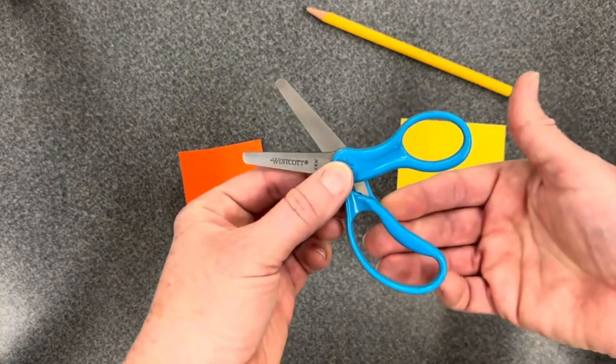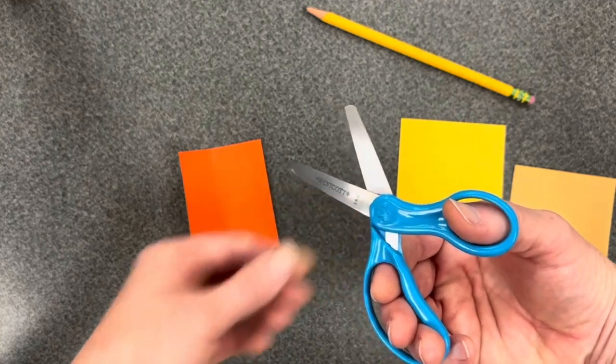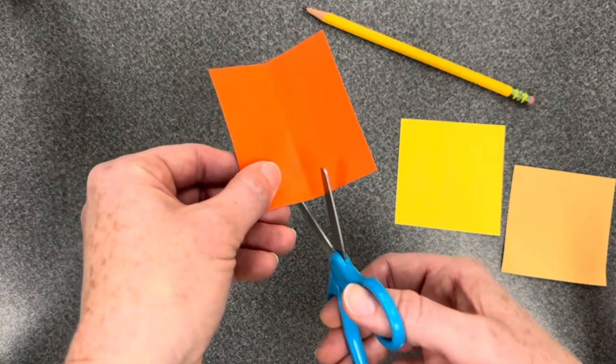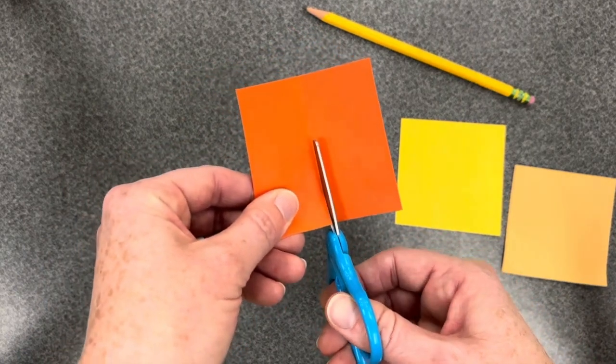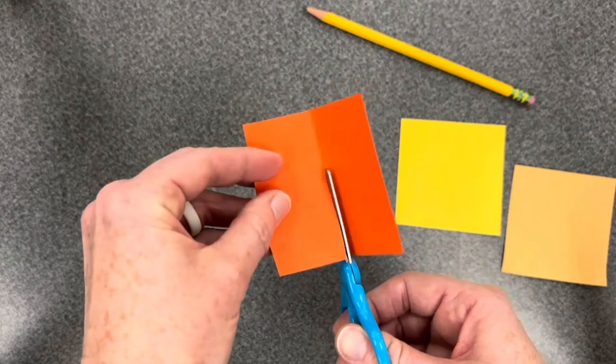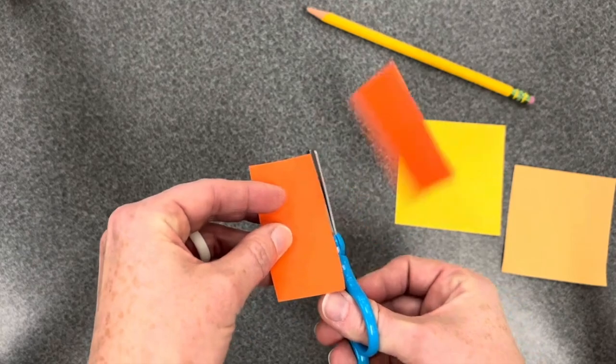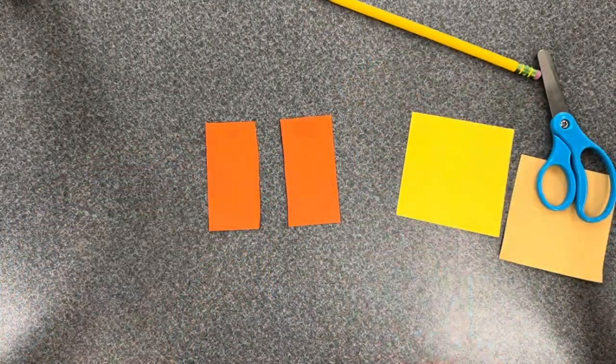So you're going to slide your fingers into the bigger section, thumb goes into the smaller section, fold your paper, feed it to the back of the scissors, and then squeeze and lift to cut on that folded line. When you're done, you should have two rectangles.